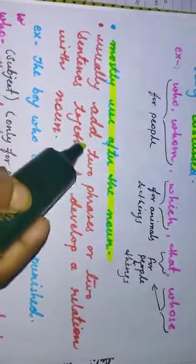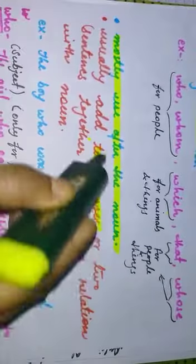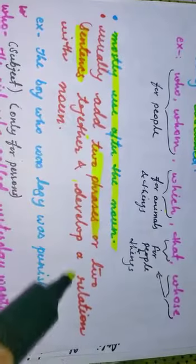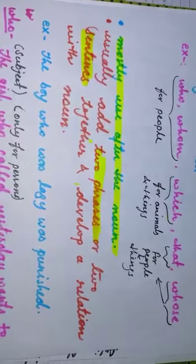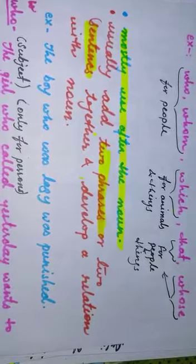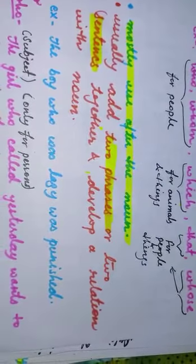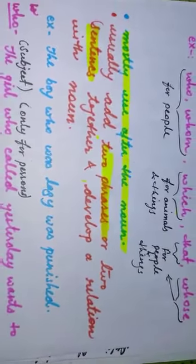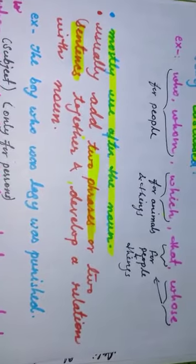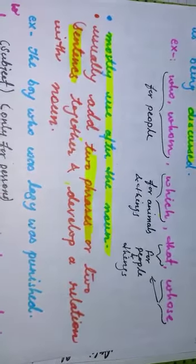The second bullet point is that relative pronouns usually add two phrases or two sentences together and develop a relation with nouns. Relative pronoun ka ek sab se important kaam ye bhi hota hai ki ye do phrases ko ya do sentences ko join karne ka kaam bhi karta hai. Now we will have one example, and with the help of that example, I will tell you what the antecedent of a relative pronoun is.